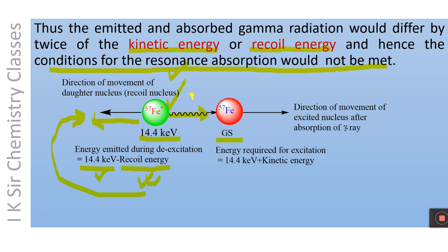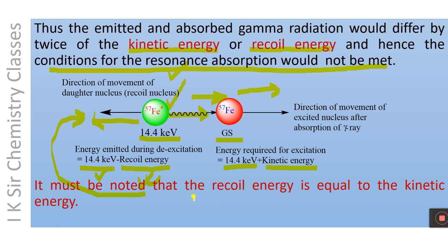Now, the ground state nucleus absorbs the gamma radiation, and in accordance with the law of conservation of momentum, the newly excited nucleus will start to move in the direction of the gamma ray. As a result, the energy required for excitation will be 14.4 keV plus the kinetic energy of the newly excited nucleus. Since the recoil energy equals the kinetic energy, the emitted energy and the energy required for excitation will differ by twice the recoil energy.